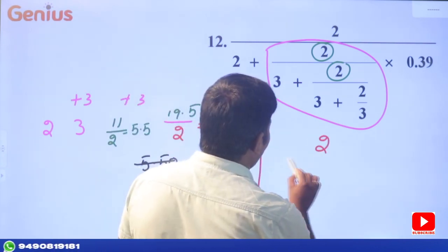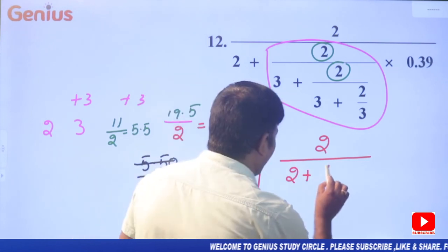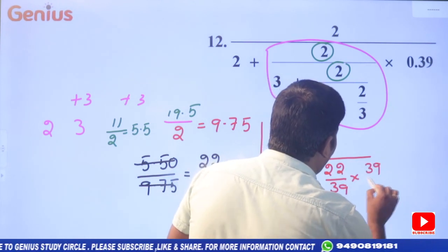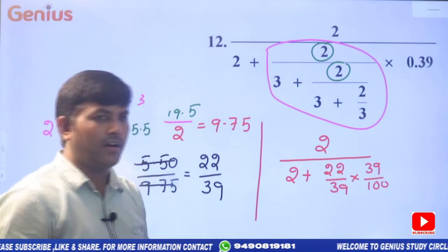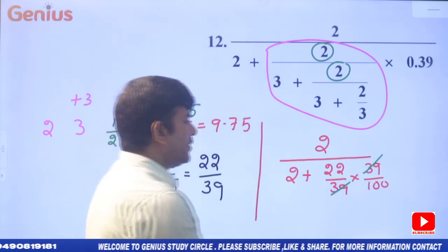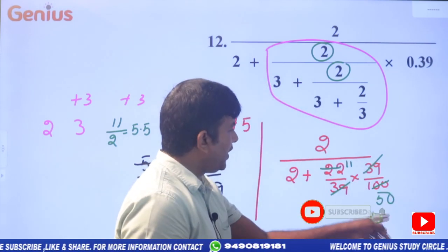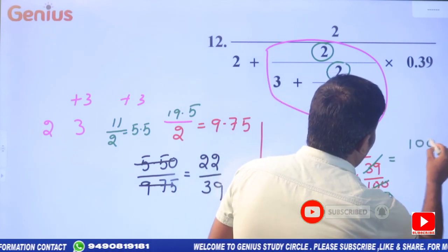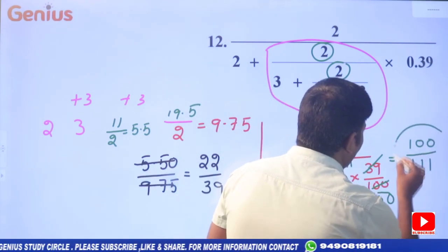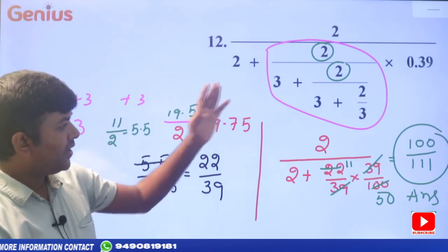The expression is 2 plus 22/39, multiplied by 39/100. Now 39 and 39 cancel. 2 is how many times? 11 times. So 50 into 2 equals 100. 50 into 200 plus 11 equals — so finally our problem answer is 100 by 111.